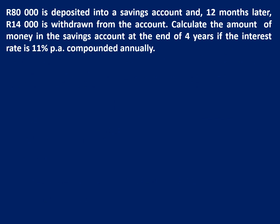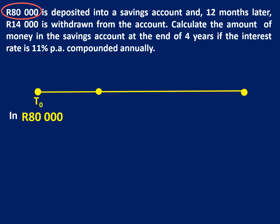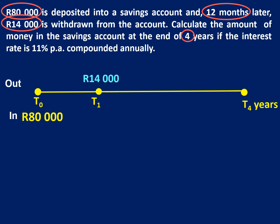In the second example, 80,000 Rand is deposited into a savings account, and 12 months later 14,000 Rand is withdrawn from the account — so this time money is coming out. Calculate the amount of money in the savings account at the end of four years if the interest rate is 11% per annum compounded annually. On the timeline, 80,000 Rand goes in at T0, then at T1 — one year later — 14,000 Rand comes out, shown on the opposite side of the timeline. We want to know how much will be in the account at the end of four years.